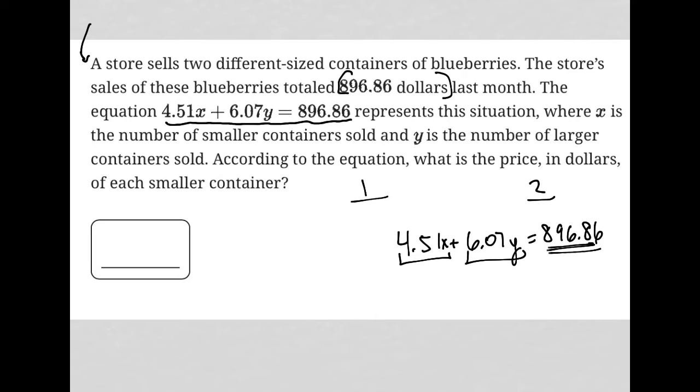So I would bet that we're calling one size of the container of blueberries the X size. And for that size, those containers cost $4.51. And we have the other size of blueberry containers that we're going to call the Y size, and those cost $6.07. That's the only way this equation makes any sense—these have to be dollar amounts.